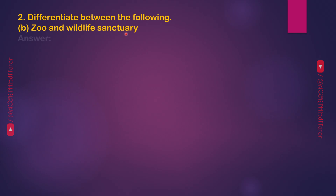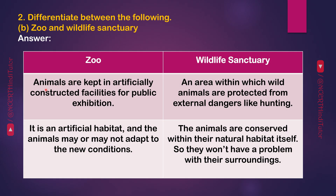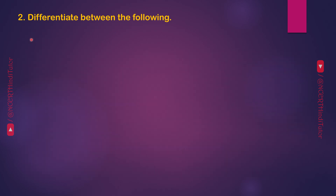Differentiate between Zoo and Wildlife Sanctuary. Zoo: animals are kept in artificially constructed facilities for public exhibition. Wildlife Sanctuary: an area within which wild animals are protected from external dangers like hunting. Zoo: it is an artificial habitat and the animals may or may not adapt to the new conditions. Wildlife Sanctuary: the animals are conserved within their natural habitat itself, so they won't have a problem with their surroundings.